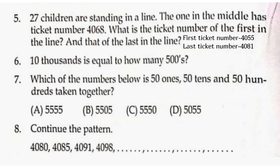10,000 is equal to how many 500s? Answer: 20. Which of the numbers below is 50 ones, 50 tens, and 50 hundreds taken together? Answer: 5,550.